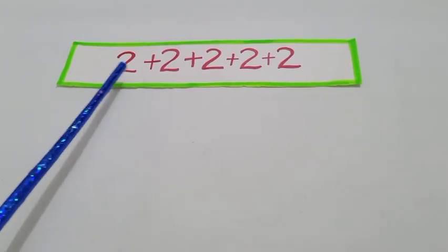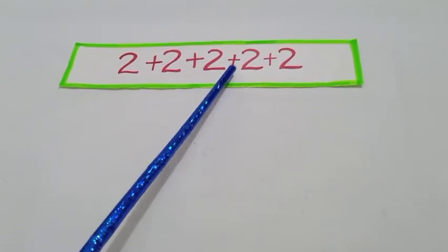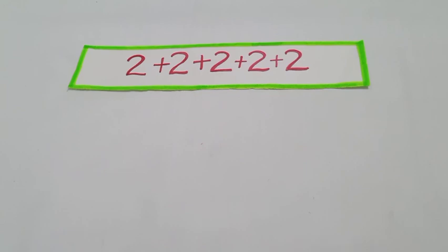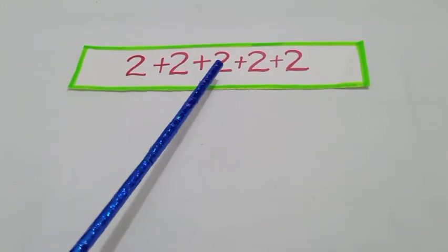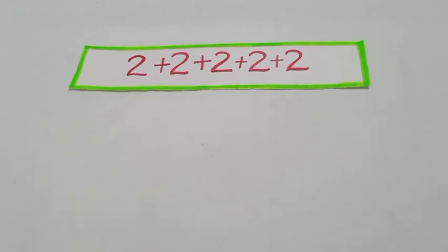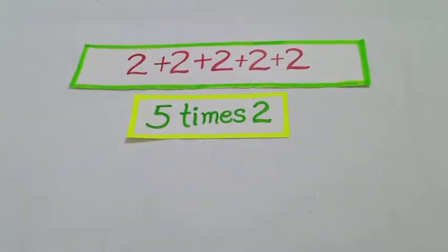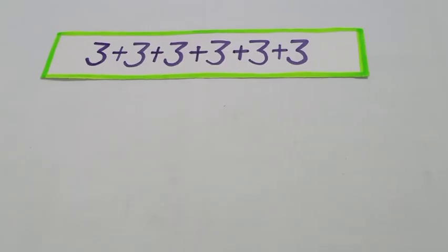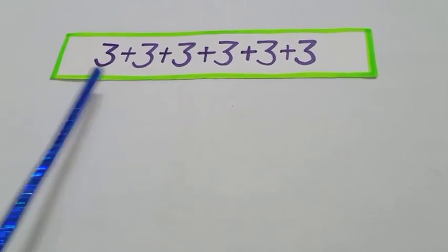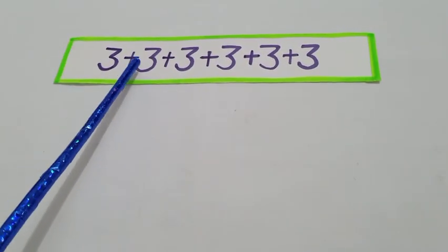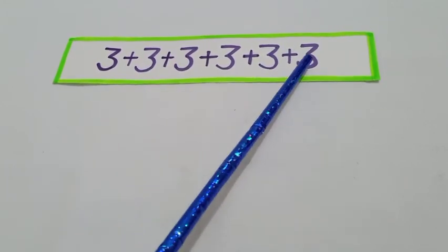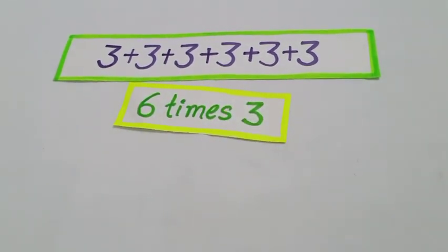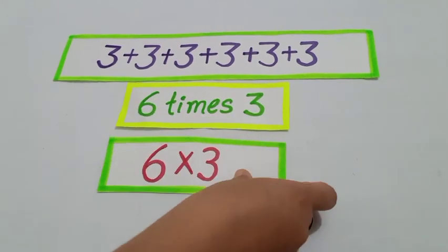Next sum is 2 plus 2 plus 2 plus 2 plus 2 plus 2. Let's see how many times we have been given 2: 1, 2, 3, 4, 5 — 5 times 2. Now let's see how many times we have been given 3: 1, 2, 3, 4, 5, 6 — 6 times 3. How do we write this? 6 multiply 3.